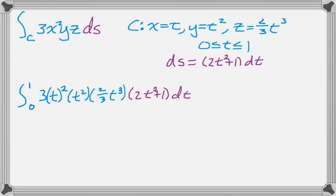All right, and now it's just a normal integral. So 2, and then we end up with t to the 7th. So the 2 is the 3 and 2 thirds multiplied together is just 2. And then t squared, t squared, and t cubed is t to the 7th, and then we still have the ds right there, which is that. And then I'm just going to distribute.